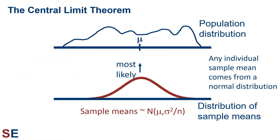If we look at this distribution of sample means, any individual sample mean comes from a normal distribution, and the most likely result is that it comes from the middle of the distribution, which corresponds to the mean of the population. Sometimes the mean of any particular sample would not be close to the mean of the population, and only rarely would it be far away. The Central Limit Theorem allows us to calculate how close any particular sample mean is likely to be to the true population mean.